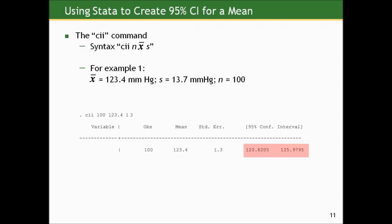Now how can Stata help us? In the last example the confidence intervals came from the article, but in the first two we computed them by hand. With Stata we should never have to do that again. The command is CII — confidence interval immediate — which means you bring summary measures to the table and Stata acts as a calculator. The syntax is: type CII, then give the sample size, the sample mean, and the sample standard deviation in that order. Going back to example one — sample mean 123.4, sample standard deviation 13.7, sample size 100 — Stata gives the same confidence interval endpoints we computed by hand.